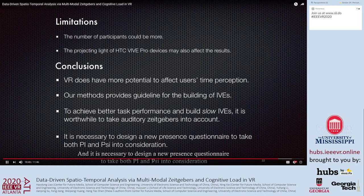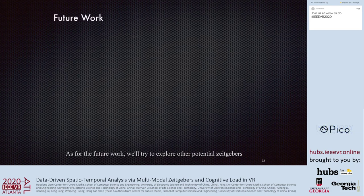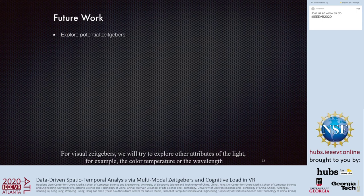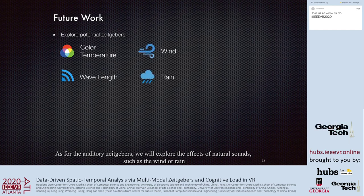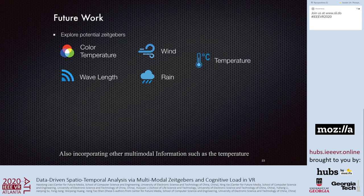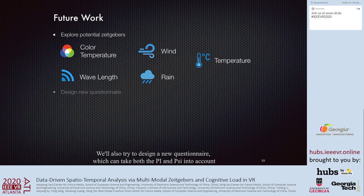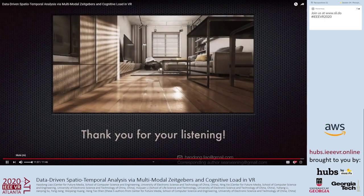It is necessary to design a new presence questionnaire to take both PI and PSI into consideration. Limitations are that the number of participants could be more, and the projecting light of HTC Vive Pro devices may also affect results. For future work, we will explore other potential Zygibers—for visual Zygibers, other attributes of light such as color temperature or wavelength; for auditory Zygibers, effects of natural sounds such as wind or rain; and incorporating other multimodal information such as temperature. We will also design a new questionnaire accounting for both PI and PSI.